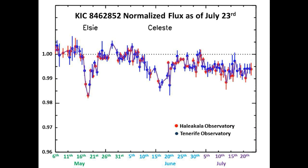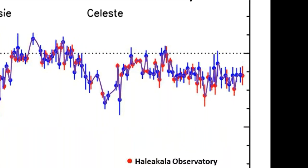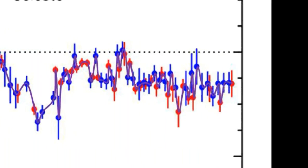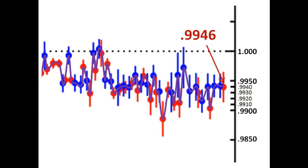So let's locate the position of this calculated flux level. At the very tip of the red arrow is the current position on the graph that denotes the long-term accelerated dimming level for July 23rd. Notice that we are pretty much right on the level of the last three measurements, so everything is checking out so far.